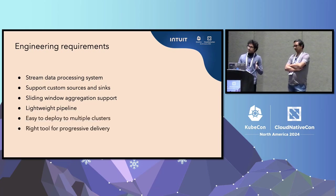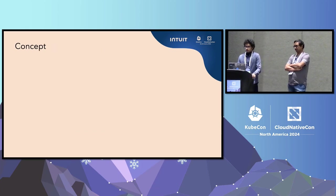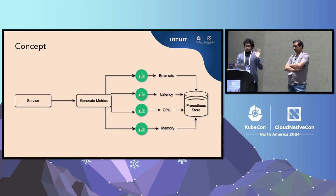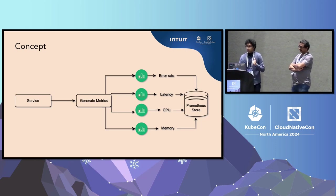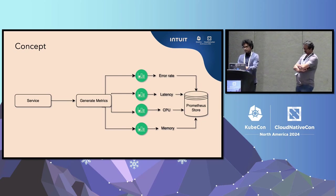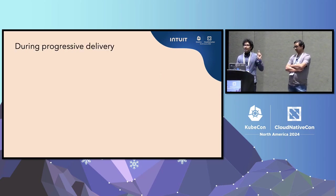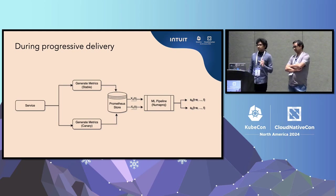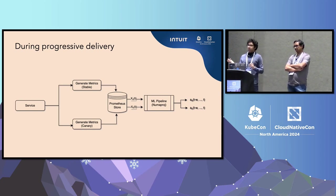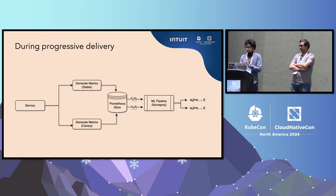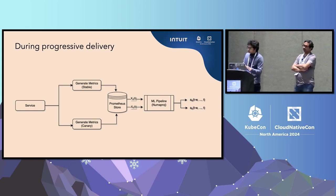We also need to choose the right tool for progressive delivery — in this case, Argo Rollouts, which worked really well. At a broad level: a service generates golden signal metrics — error rate, latency, CPU, and memory — stored in Prometheus. During progressive delivery, that same service generates a second set of metrics for the canary deployment, so we have stable and canary metrics both saved to Prometheus. We pull that data into the ML pipeline as two different payloads and generate anomaly scores for both the stable and canary versions.